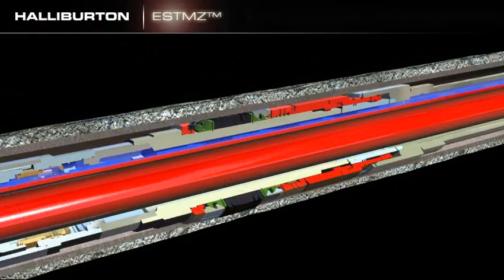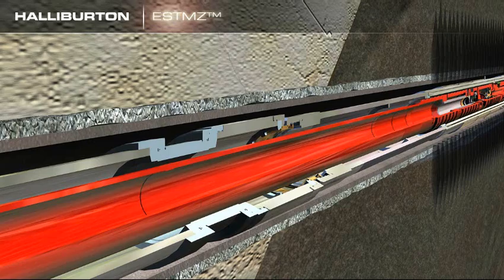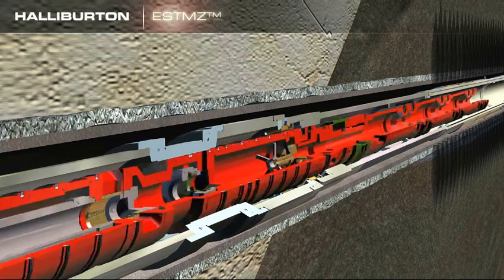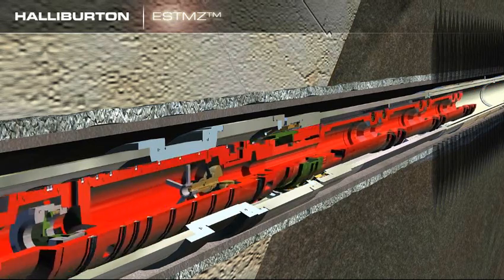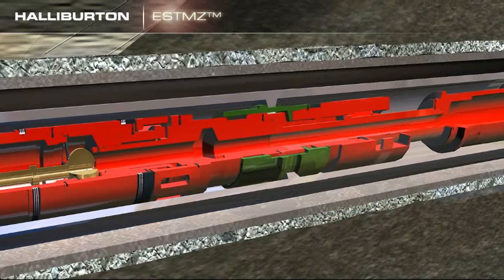Pressure is applied down the annulus and all the isolation packers are set. The service tool is moved to open the lower sleeve, then moved to open the upper port sleeve. Further movement will position the shear-out collet in the weight-down frack or gravel packing position.